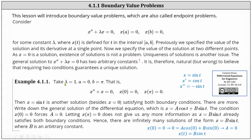In the first example, we have lambda equals one, a equals zero, and b equals pi. Therefore, we have x double prime plus x equals zero, where x of zero equals zero and x of pi equals zero. Notice x equals zero is a solution, but so is x equals sine t. If x equals sine t, then x prime equals cosine t, x double prime equals negative sine t, and therefore x double prime plus x equals zero. Also, x of zero equals zero implies sine zero equals zero, which is true, and x of pi equals zero implies sine pi equals zero, which is also true.